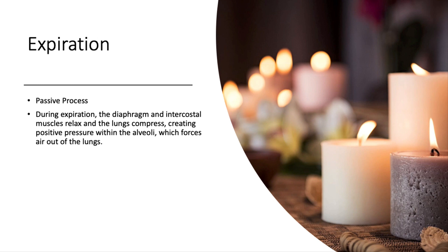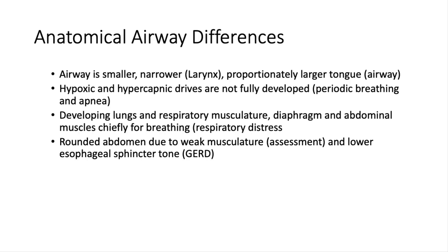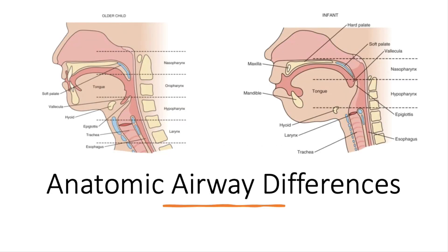Different conditions will affect either inspiration or expiration differently. During our growth and development video series we talked about anatomic airway differences already. This is just an example of the anatomic airway differences at different ages — on the right you can see the infant's airway, on the left you can see the older child's airway, and the many differences. This is involved in how we take care of them.